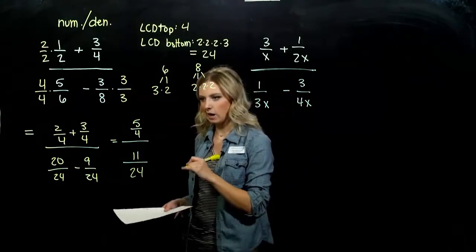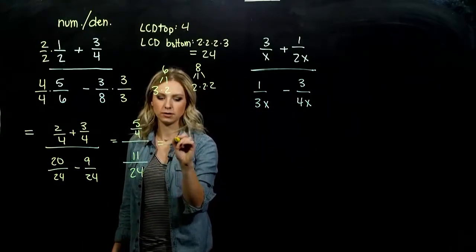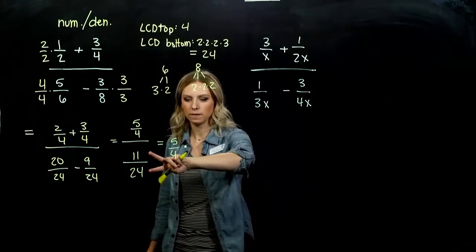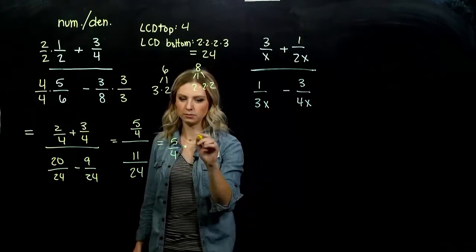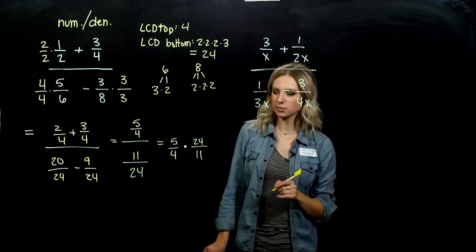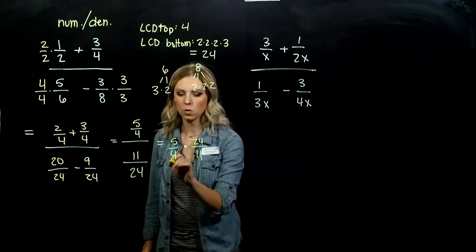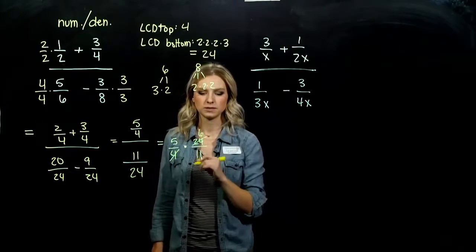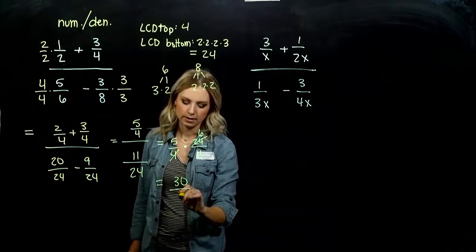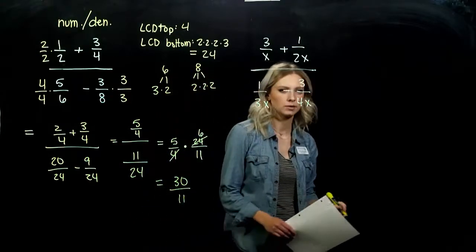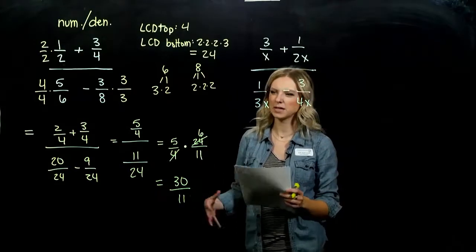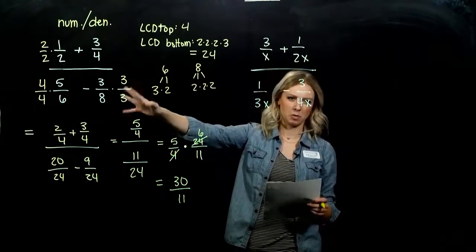We can combine the top two fractions and the bottom two fractions since we have common denominators. We're looking at five-fourths all over 11 over 24. Now, when I have a fraction divided by a fraction, we keep the top one and multiply by the reciprocal of the bottom — flipping it upside down. Four goes into 24 six times, so six times five gives me 30 up top, 11 down below. Same result as before, but a little more work with this method.